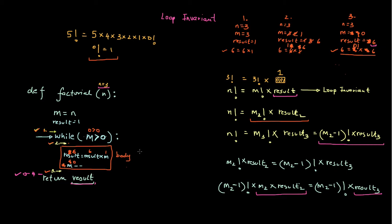Why didn't I do it this way? If I had m minus minus, which guaranteed that my loop actually terminated, why didn't I just do it this way — having m minus minus and after that result equals result times m? What makes this wrong, and what makes the other way actually correct?